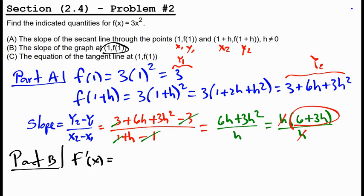So f prime of x gives us 6x. And f prime of 1 gives us 6 times 1. So the tangent slope equals 6.